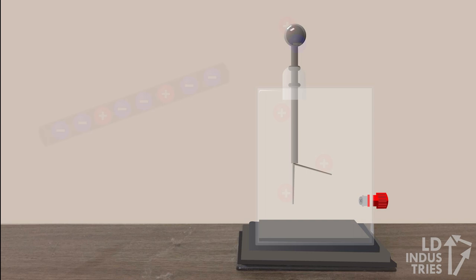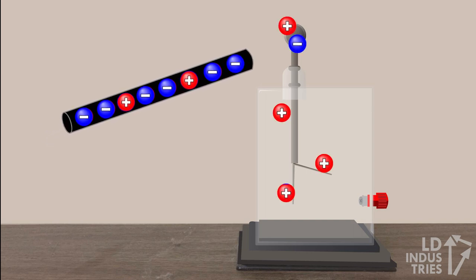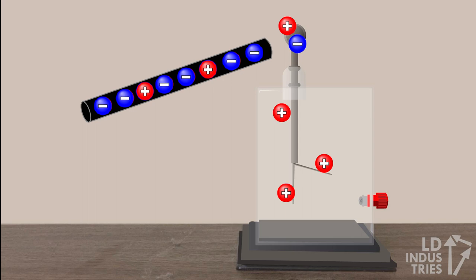A similar process can occur when a negative rod is brought close to, but does not touch, a positive electroscope. To understand this situation, you need to remember that even a positive object still has some negative charges within it.